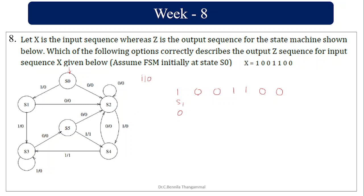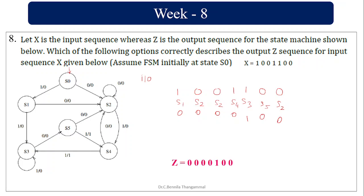In S1, input 0 → go to S2, output 0. In S2, input 0 → remain in S2, output 0. In S2, input 1 → go to S4, output 0. In S4, input 1 → go to S3, output 1. In S3, input 0 → go to S5, output 0. From S5, input 0 → go to S2, output 0. So the output sequence is 0, 0, 0, 0, 1, 0, 0.